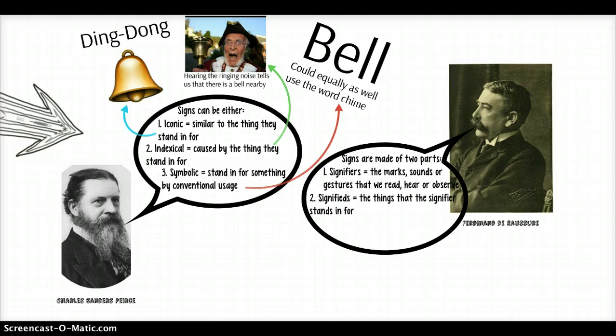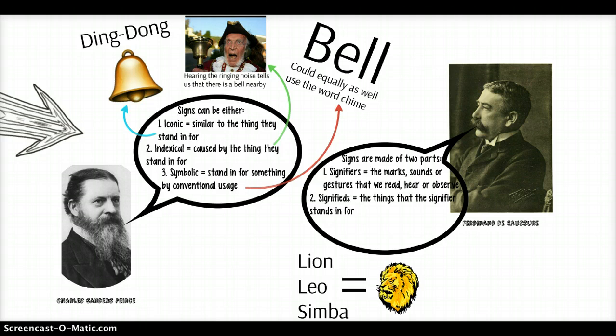And then there are the signifieds — the things that are being stood in for. So we've got a bunch of sounds: lion, Leo, Simba — all of which can be used to stand in for the same animal. Those are the two halves of the sign. But Saussure also observes that this relationship is arbitrary.